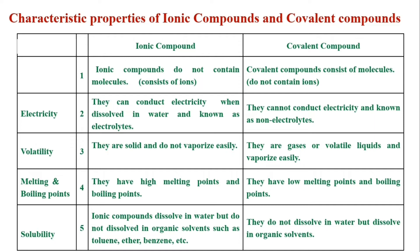Ionic compounds are solids and do not vaporize easily. Covalent compounds are volatile liquids and vaporize easily.